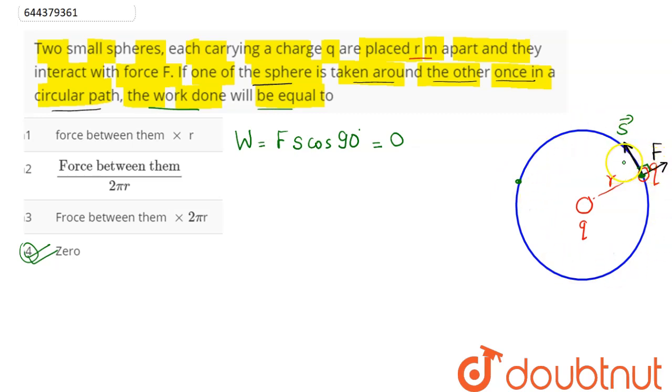this will be an equipotential surface. And since potential difference is equal to 0, therefore delta U is equal to Q delta V, which will be equal to 0.